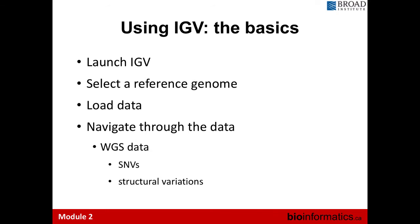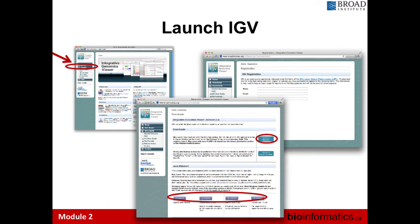For IGV general setup, the basics are: launching IGV, selecting the right reference genome, loading the data, and navigating through it to view single nucleotide variants and structural variations. There are two main versions of IGV: a Java web-based application and a binary file for Windows or a Mac app. They both have advantages and disadvantages — the Java application is a single double-click to run. Different versions account for different memory requirements based on your computer.